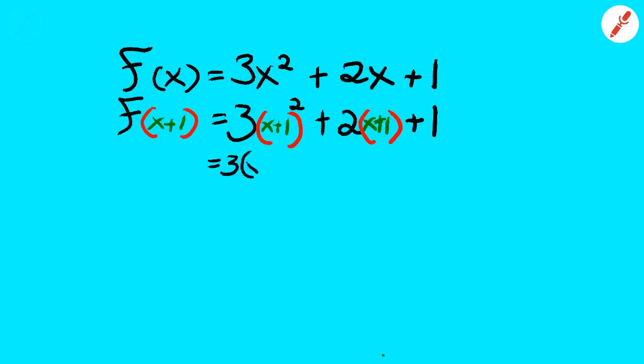Now x plus 1 is a binomial so we're going to have to FOIL it. And here I'm going to distribute the 2 into the x plus 1, which gives me 2x plus 2, and then we add the 1 on the end.